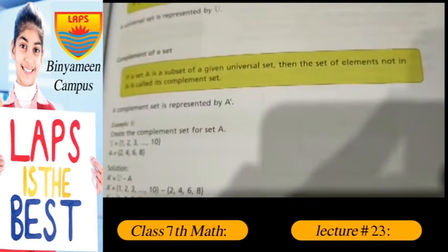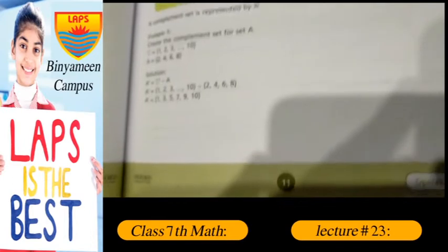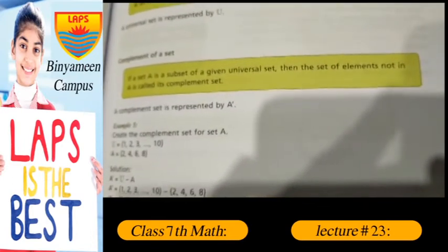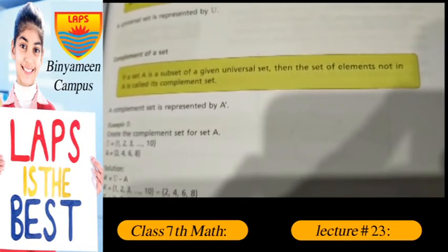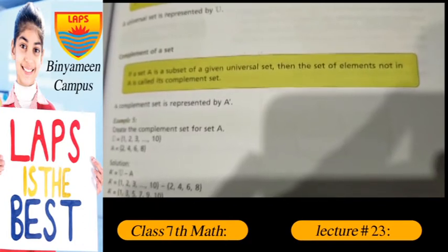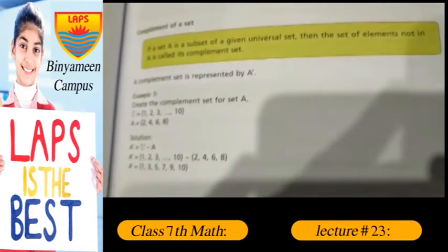Assalamu alaikum, my name is Naeem Abbas, I am your math teacher. Today I deliver a lecture from Pin Number 11, complement of set. If a set A is a subset of a given universal set, then the set of elements not in A is called its complement set. A complement set is represented by A complement.